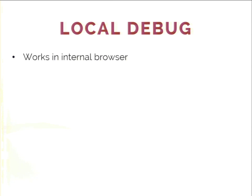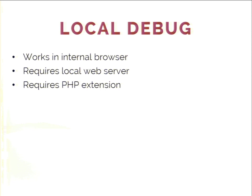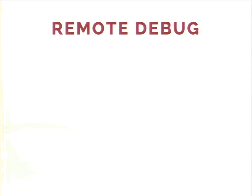When we talk about debugging, it can be split into local debug, which runs on your local machine, and remote debug, when you're working with a code base physically located on another machine. Local debug, if you're talking about an IDE, runs in the internal browser. It requires a local web server and a PHP extension — that's basically it. Local debug setup is pretty easy and requires only those three steps. If you're talking about Zend Studio, it has a built-in web server with a built-in Zend Debugger, so you can start working and debugging your code within five minutes of installing Zend Studio.